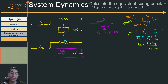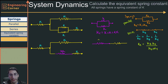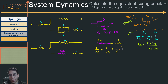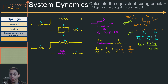Now I see two springs that are in series: this one and this one. This is 2k and this is k. The equivalent spring constant satisfies: 1 over ke equals 1 over 2k plus 1 over k. To add these fractions, I'll multiply 1 over k by 2 over 2, giving 2 over 2k.